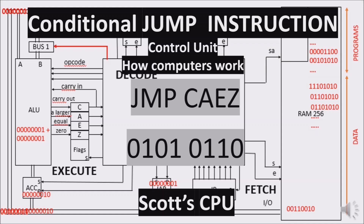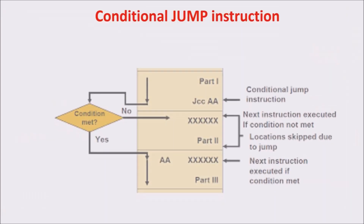This video talks about the conditional jump instruction. We'll see how the jump instruction is used in a piece of program and a simulation of the CPU behavior. At the end, we see how the control unit implements this instruction.